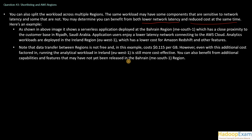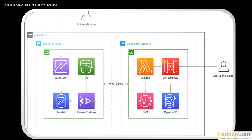Let me show you the image from the previous slide. This is a multi-region deployment. One region is where the actual application users are using the application, and the other is for back-end users who don't care about speed and performance — they are more focused on BI. The slowness in the back-end is fine for that use case.